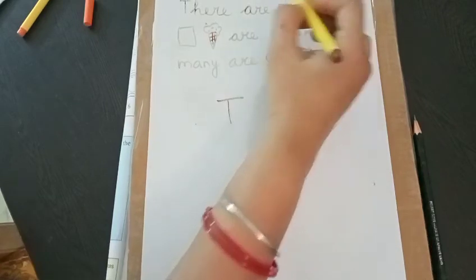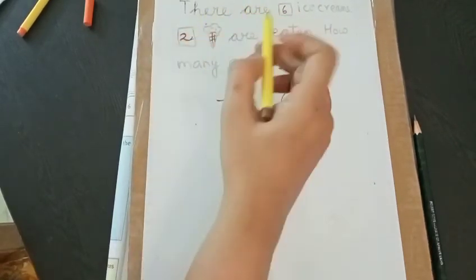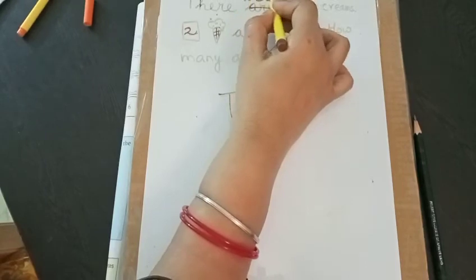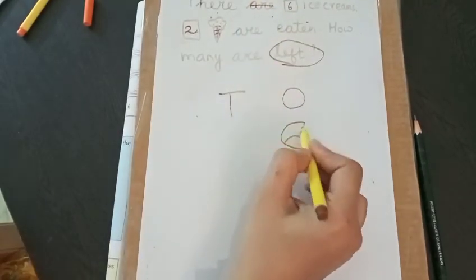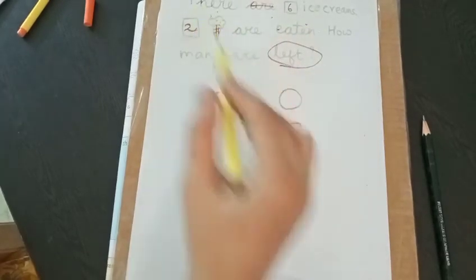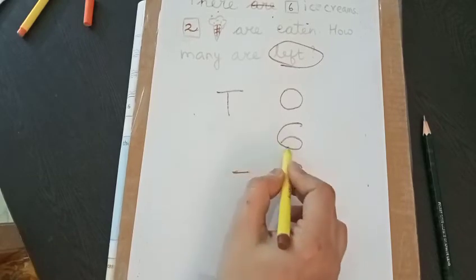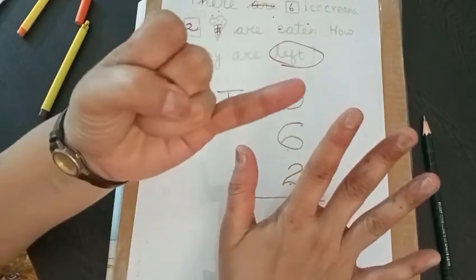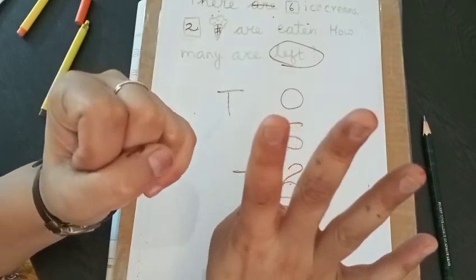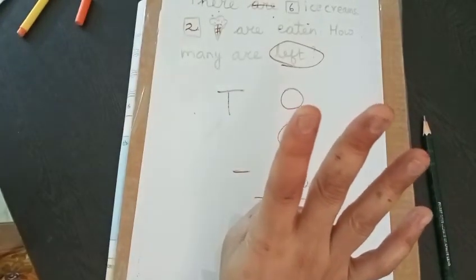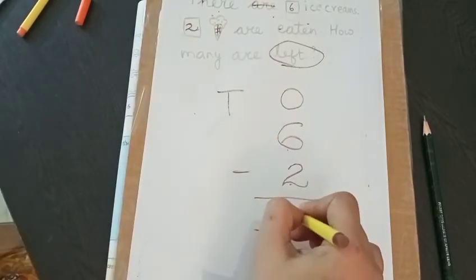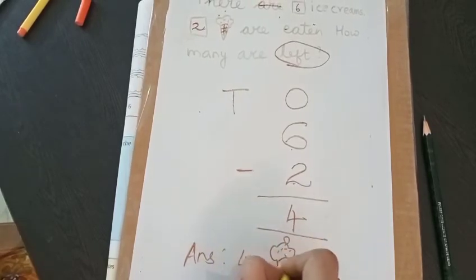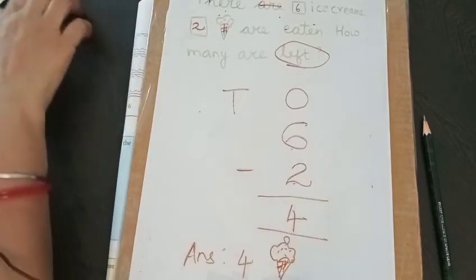How many ice creams? What is the start? I'm writing here. There were six ice creams. Six ice creams were there. So at the start there are six ice creams. How many ice creams are eaten? Two are eaten. Two ice creams. Out of six, two are eaten. So open six fingers. Out of six, 1, 2. Two ice creams are eaten. So how many are left? Four are left. So answer is four ice creams. Here I have drawn the picture of ice cream. Four ice creams.